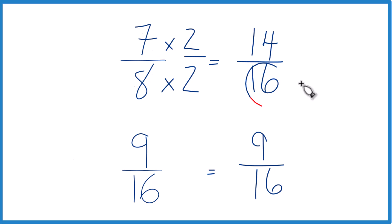So now, denominators are the same. We're just going to compare the numerators. 14 is larger than 9, so 14/16, that's larger than 9/16. These are equivalent, so 7/8, that's larger than 9/16 as well.